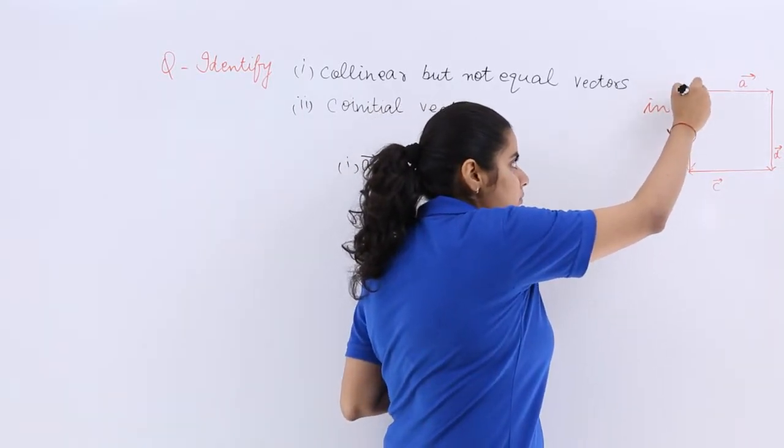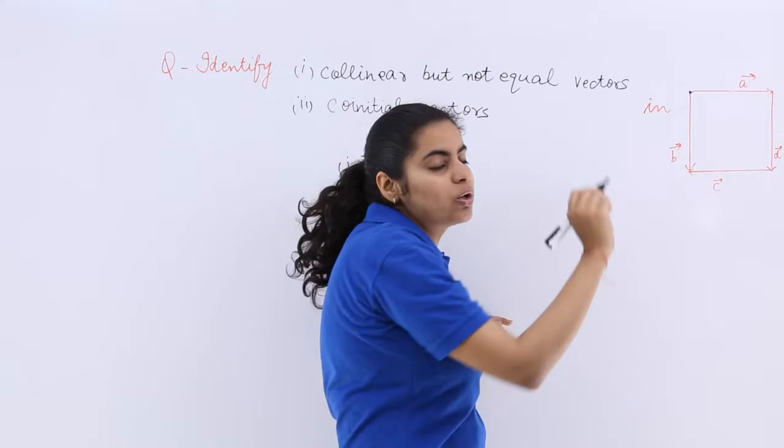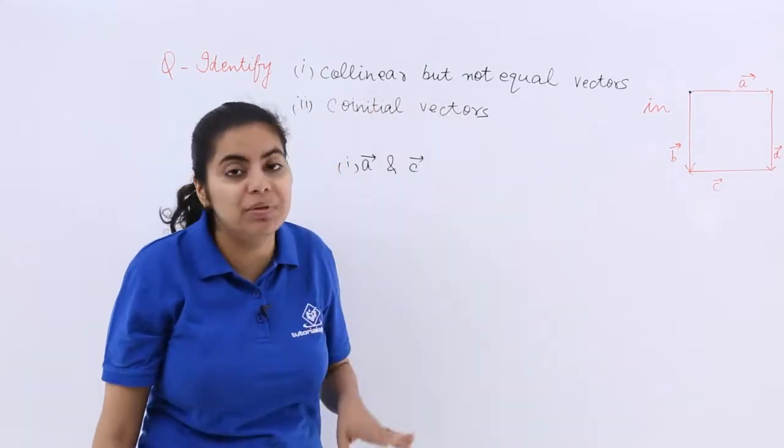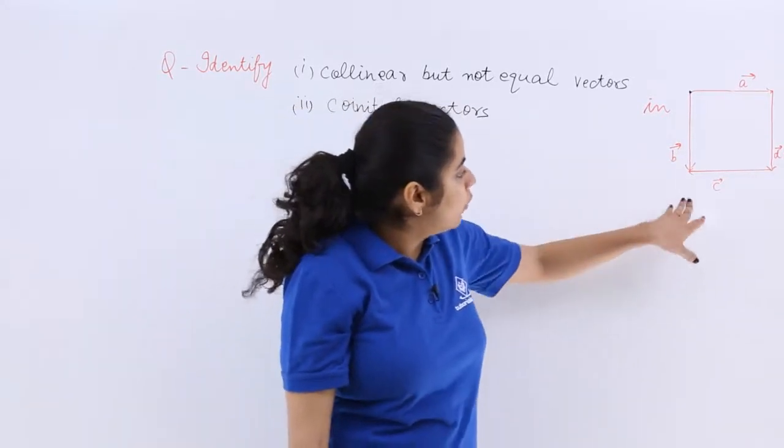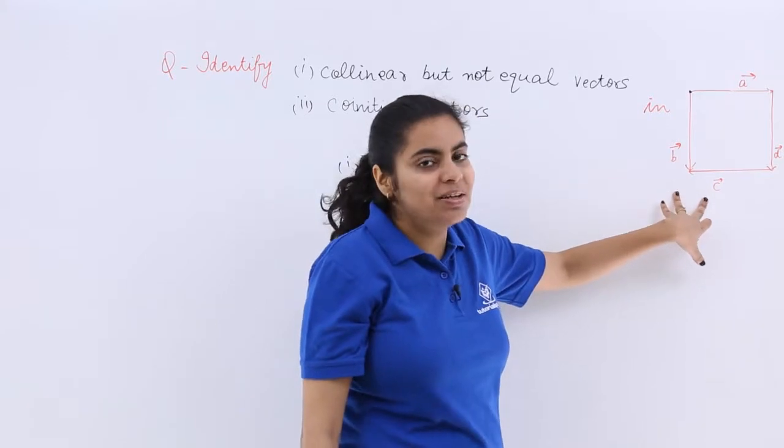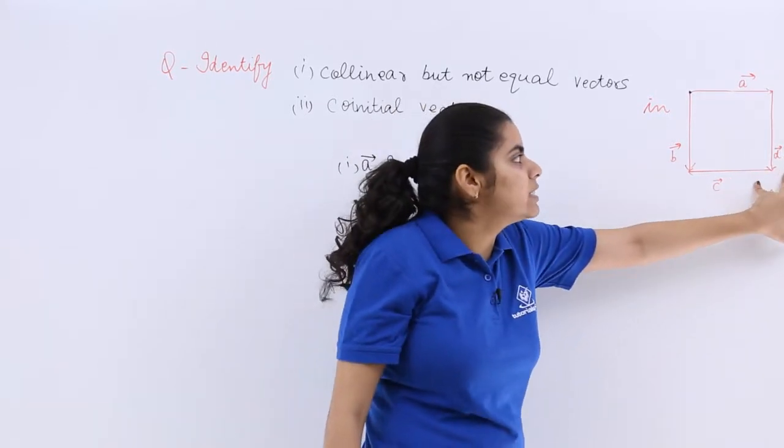This is a point and from this point B vector is also originating and A vector also. So A and B are co-initial. What about C and B? Okay, C and B are not co-initial.